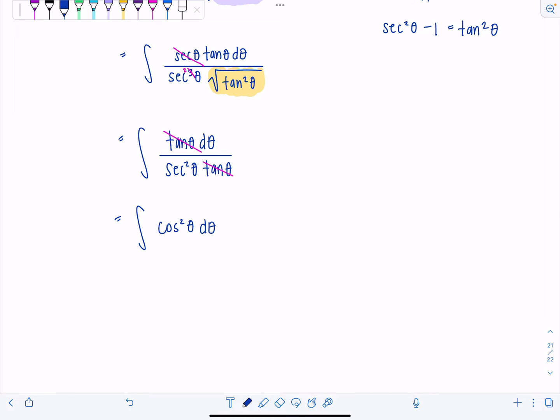d theta over secant squared theta is just integral of cosine squared theta d theta. And anytime we have antiderivative of cosine squared theta, we use our half angle identity. So I'm going to replace it with one half times one plus cosine two theta d theta.